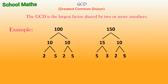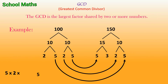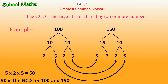Now, let us find the common divisors in both the factor trees. The first number is 5, the next number is 2, and the last number is 5. Now, let us find the GCD by multiplying these numbers: 5 x 2 x 5 is equal to 50.